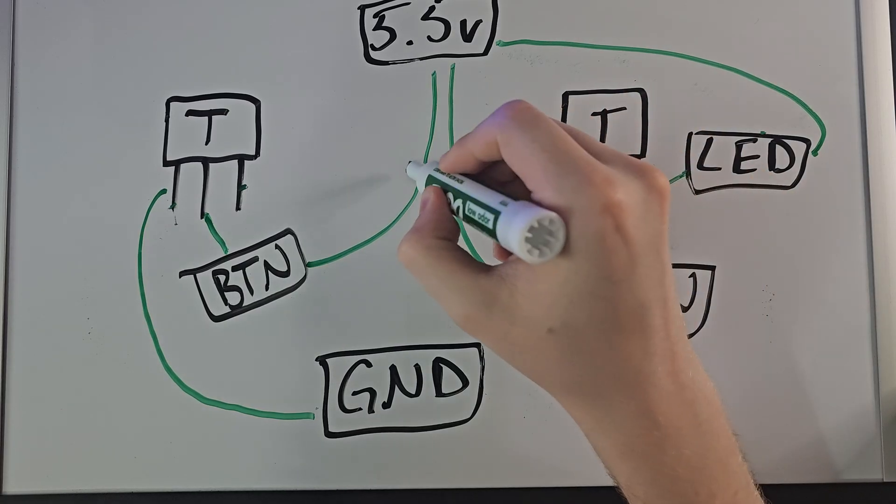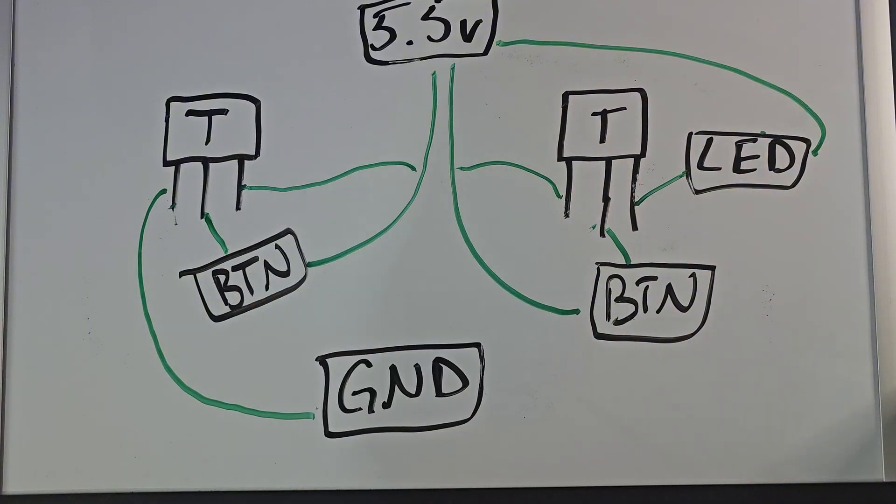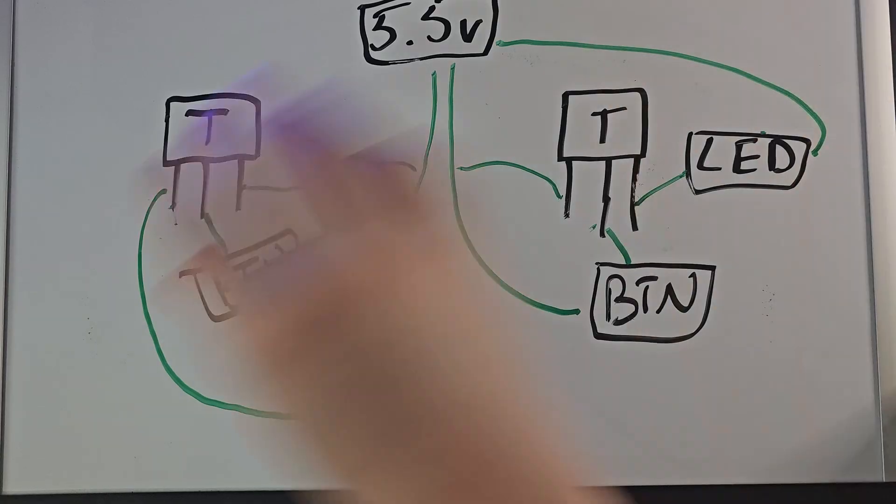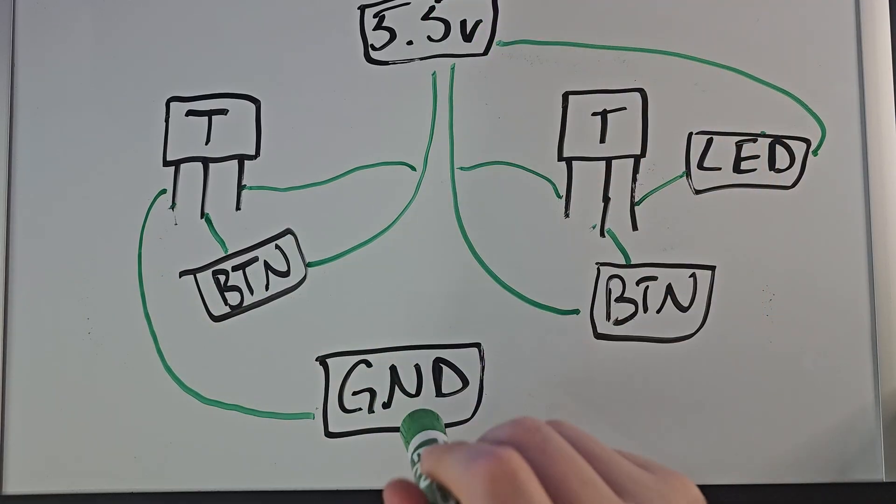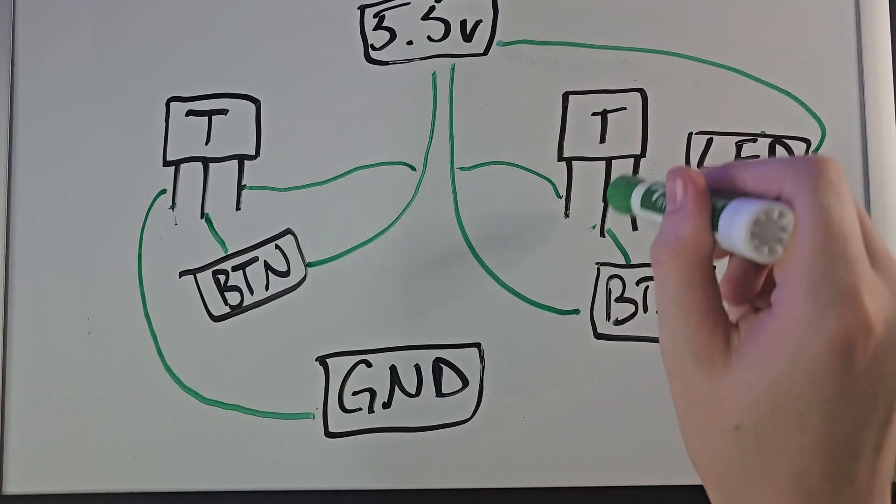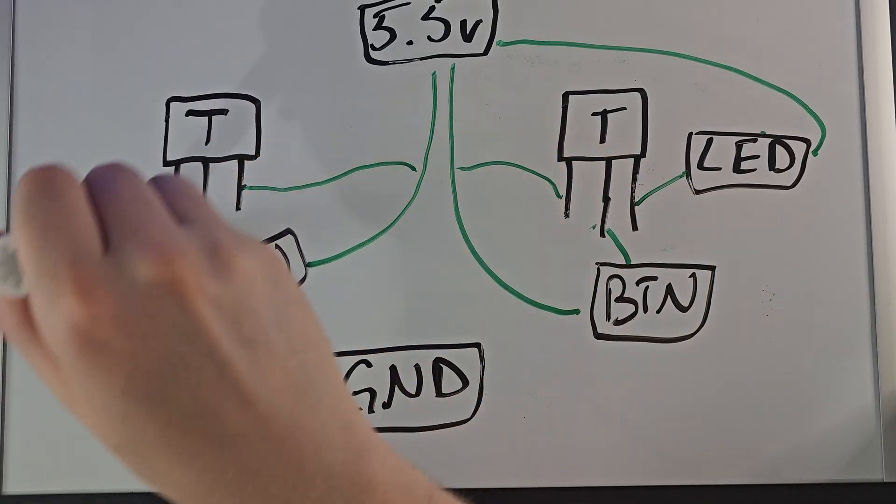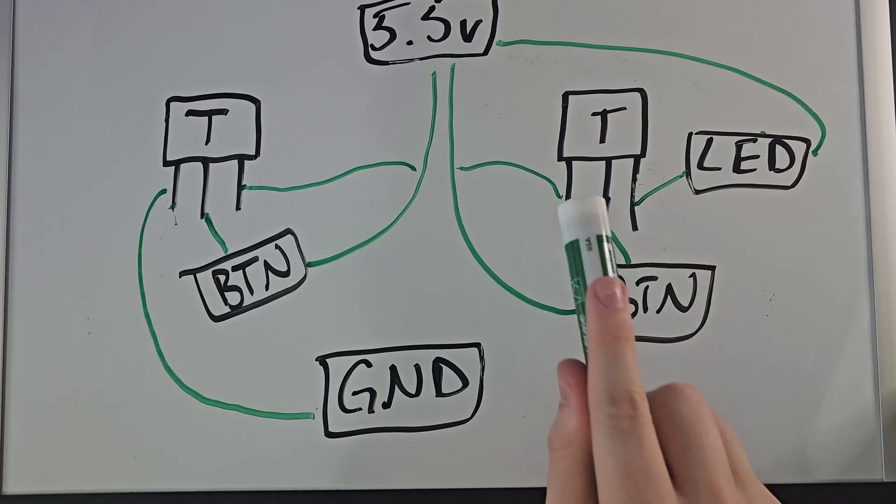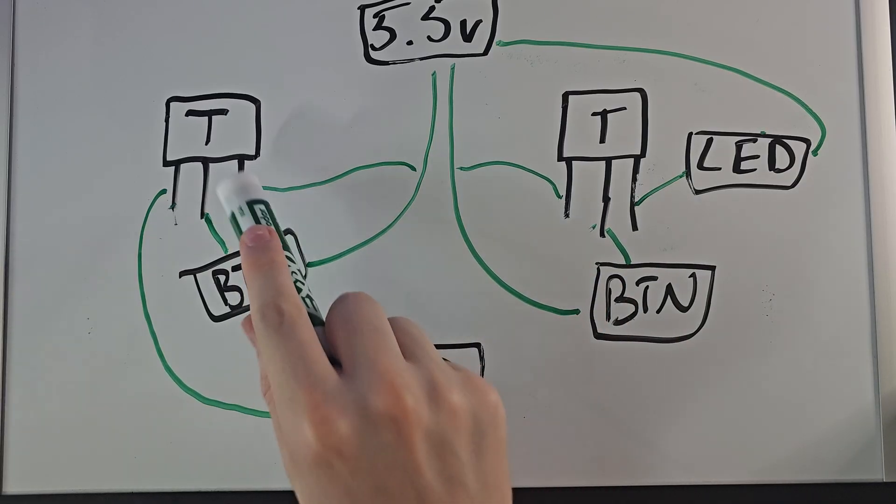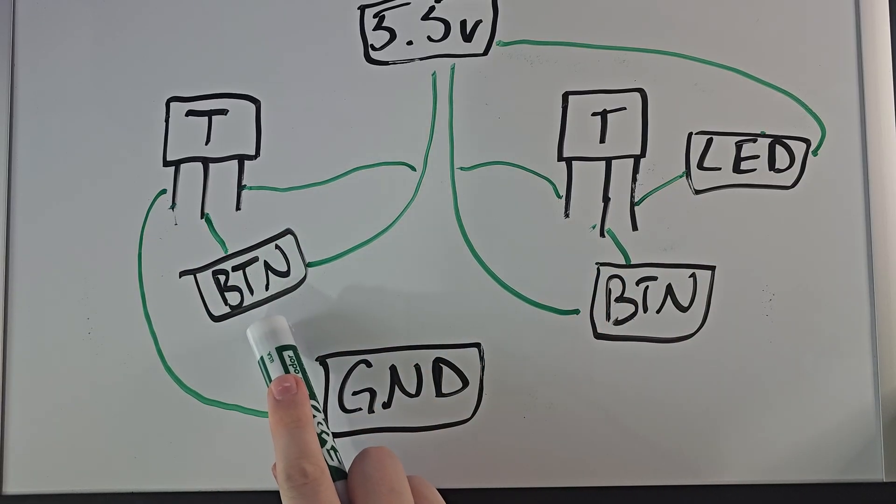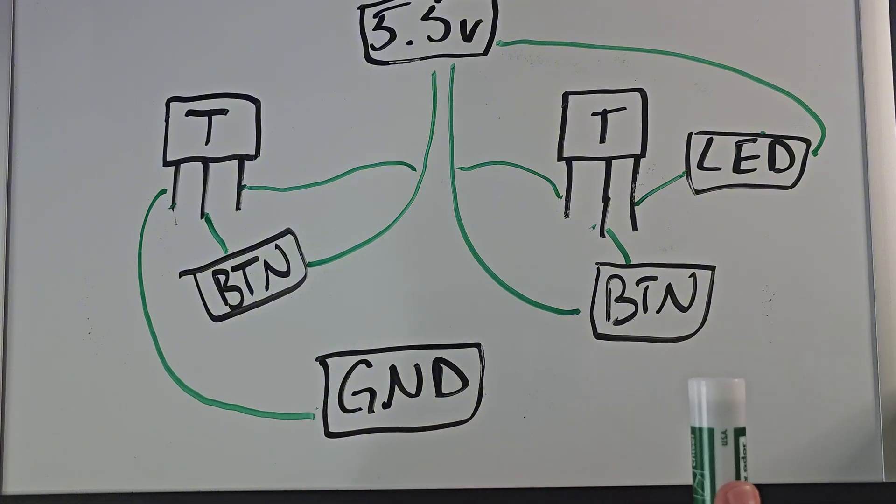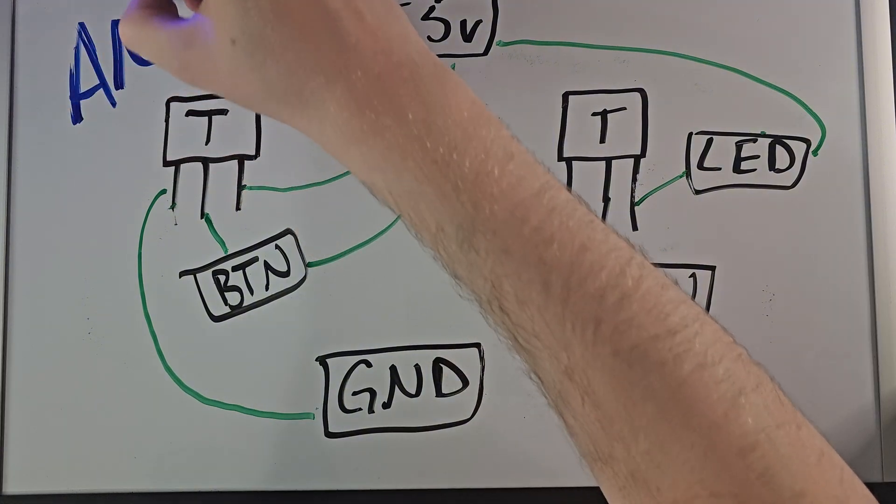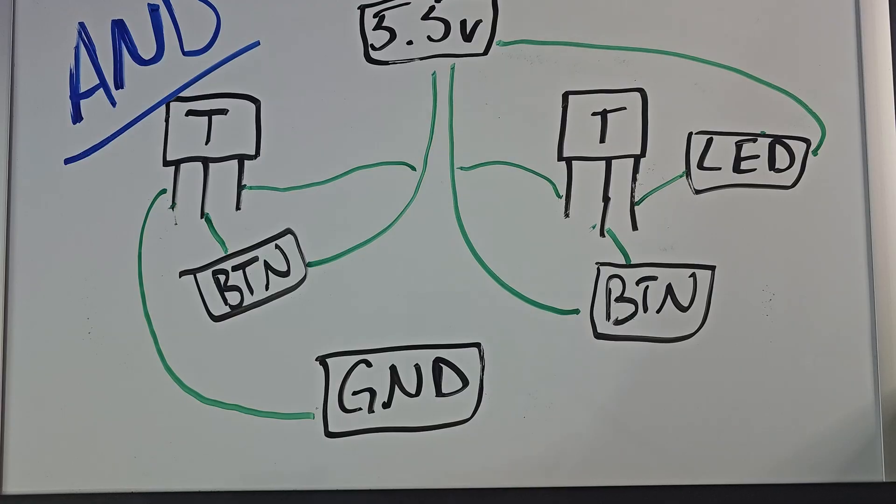But why does that work? What's the difference? It's actually quite simple. For the LED to be on, it must have a connection to the 5 volts and the ground. In this circuit, there's only one connection to the 5 volts and the ground. This means in order for the LED to turn on, it must go through both transistors to get a connection to the ground. Right now, the transistors will not allow current through them, but in order to do that, we must click both buttons at the same time.